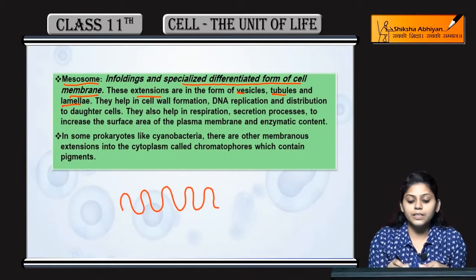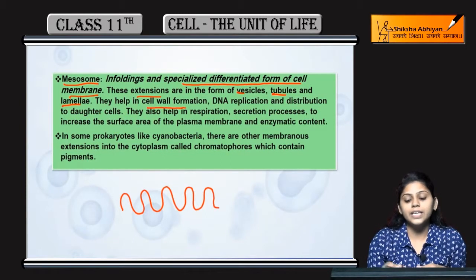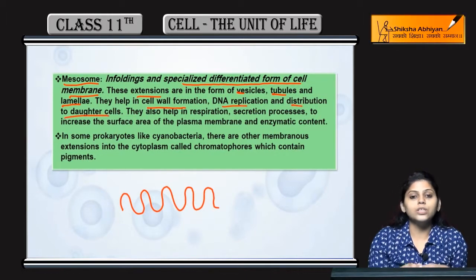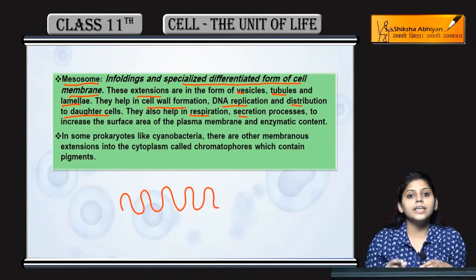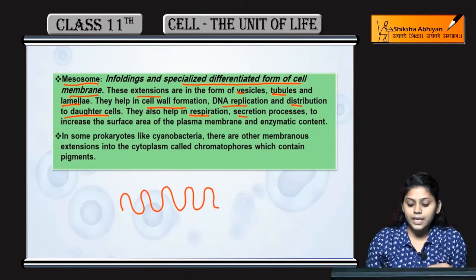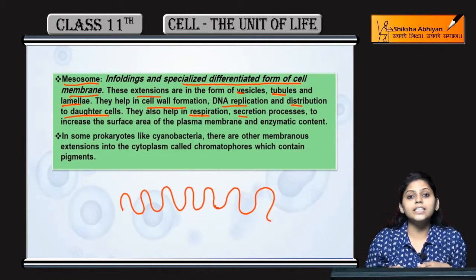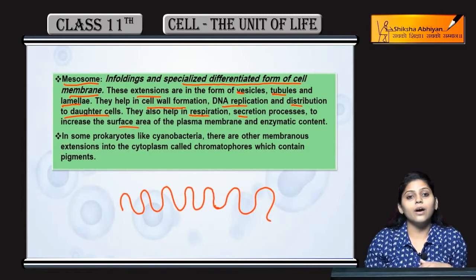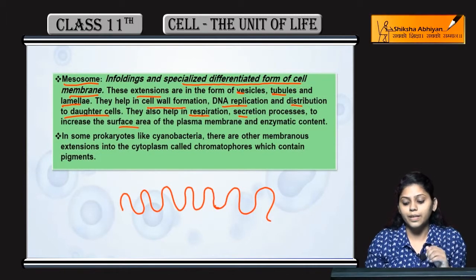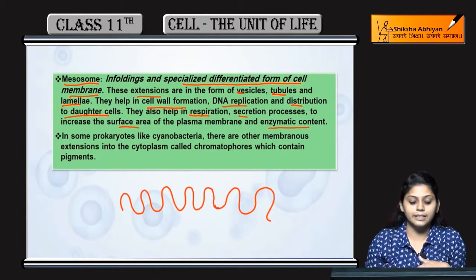Mesosomes help करती हैं cell wall formation में, DNA replication में और daughter cells में distribution में. They also help in respiration and secretion processes. इतनी सारी foldings surface area increase करती हैं plasma membrane का और enzymatic content की भी secretion करती हैं.